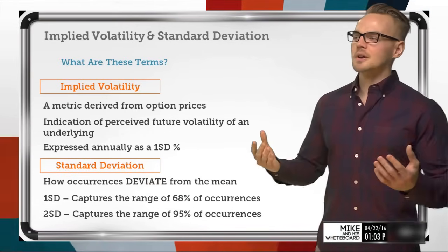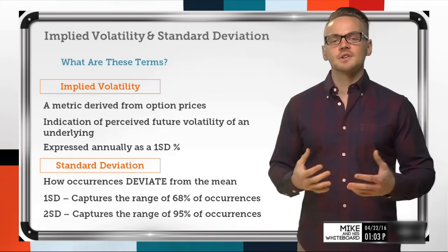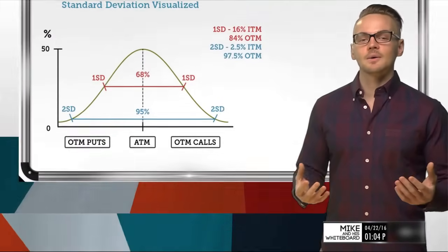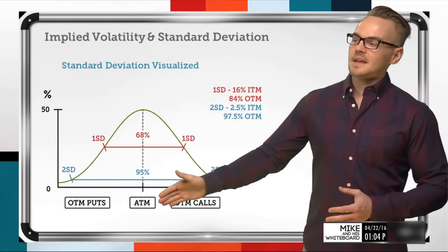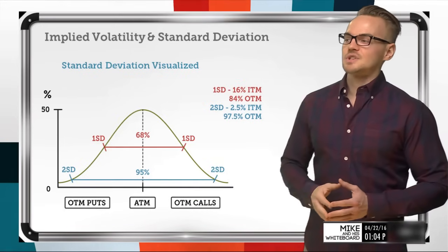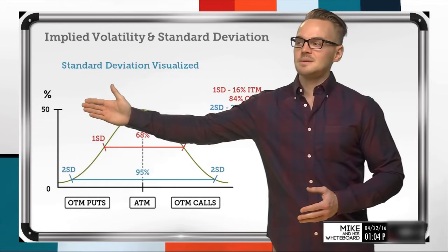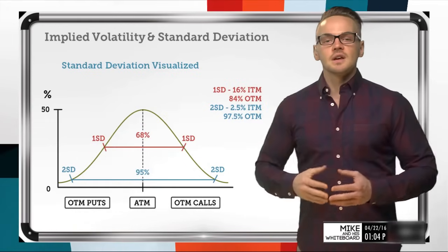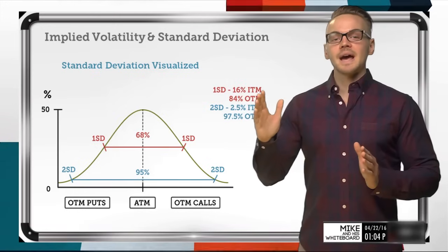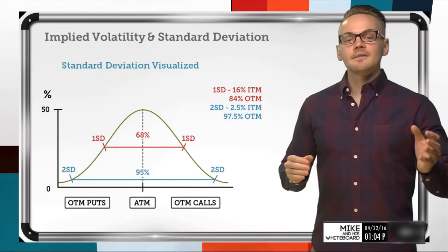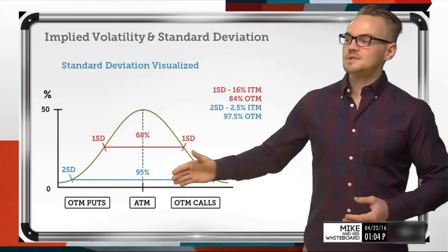So how can we tie these together? On the next slide we're going to start to visualize exactly how this works. We're going to look at an at-the-money position, and I want you to view the vertical axis as the percentage. When we're looking at out-of-the-money options going up to at-the-money options, the further out-of-the-money the options are, the closest they'll be to zero percent of being in the money.